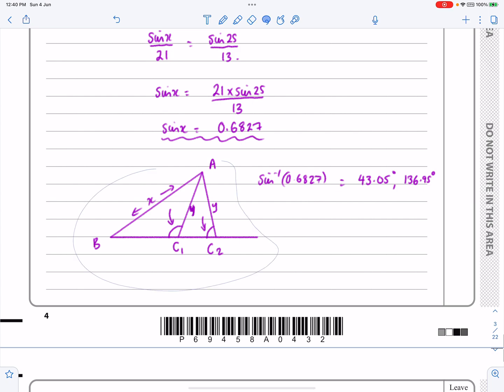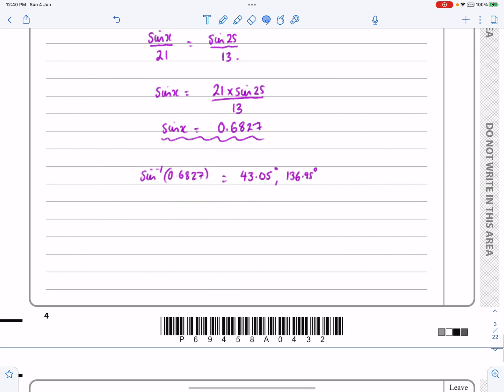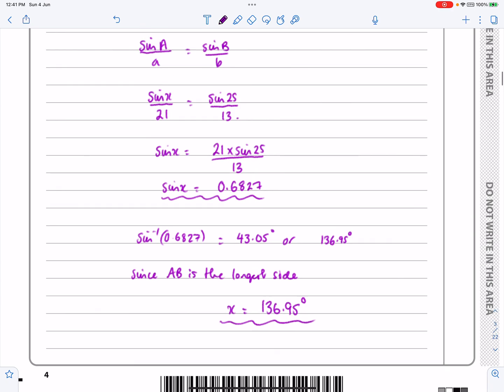So I'd say if sin alpha equals that, sin whatever angle is equal to that gives me those two. And then since AB is the longest side, X is equal to the larger of the two values there. Okay, so that's actually my written answer for it, but with an explanation there that hopefully makes sense.